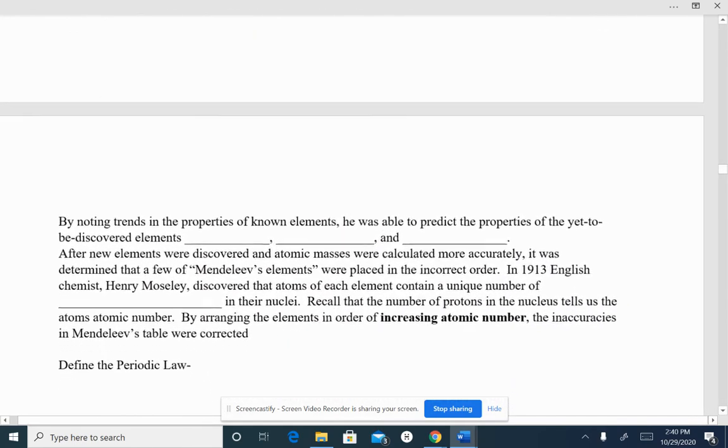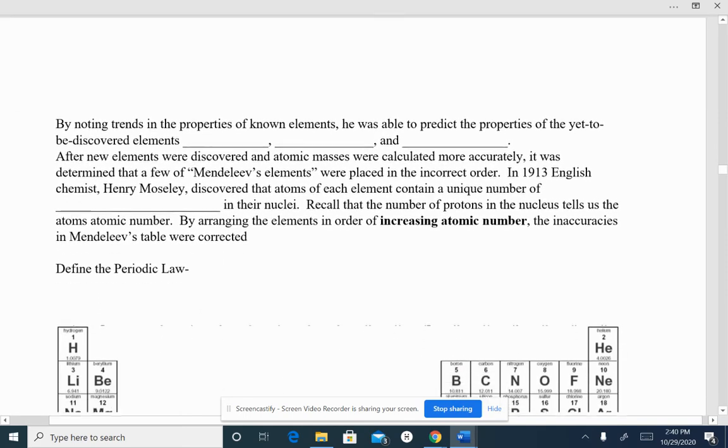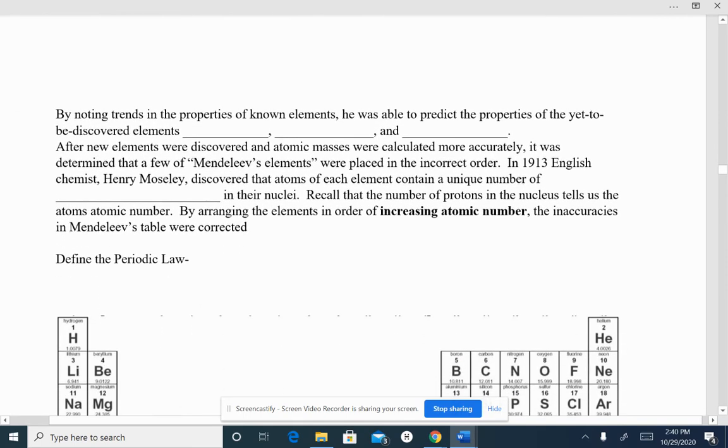By noting trends in the periodic properties of known elements, he was able to predict the properties of yet-to-be-discovered elements. Some of those yet-to-be-discovered elements were scandium, gallium, and germanium.